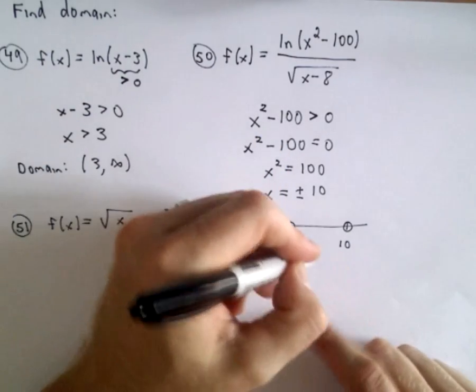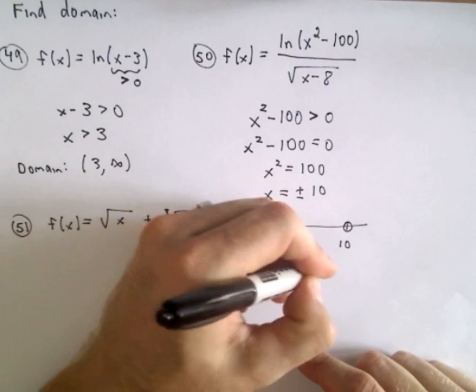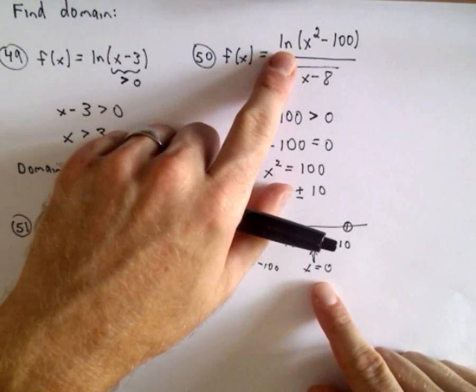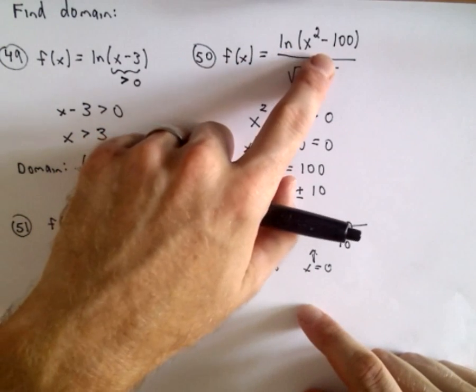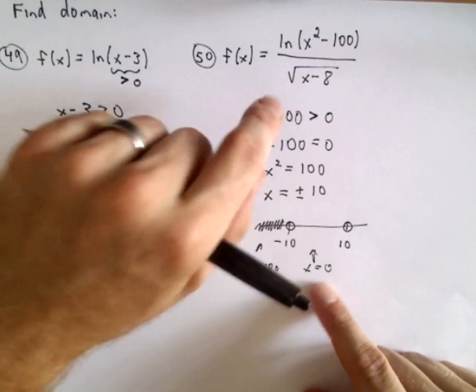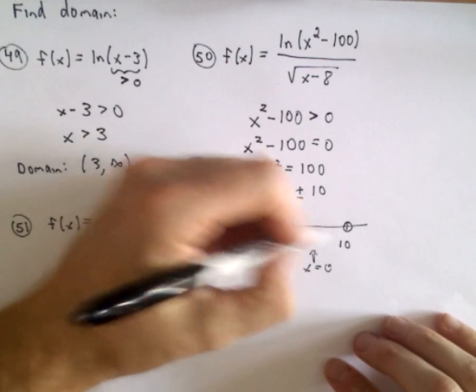If I take something between negative 10 and 10, say x equals zero, well, in that case, I would get the natural logarithm of negative 100. That's going to be undefined. So those values don't work.